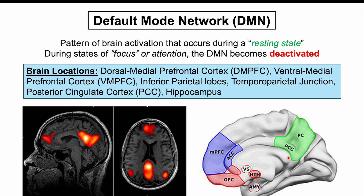These structures activate bilaterally — in both hemispheres. The default mode network is more activated in adulthood compared to very young childhood and very old age, so the extremes of age show lower activity. These structures also appear more highly interconnected in female patients. Now let's talk about the functions and purposes of the default mode network.